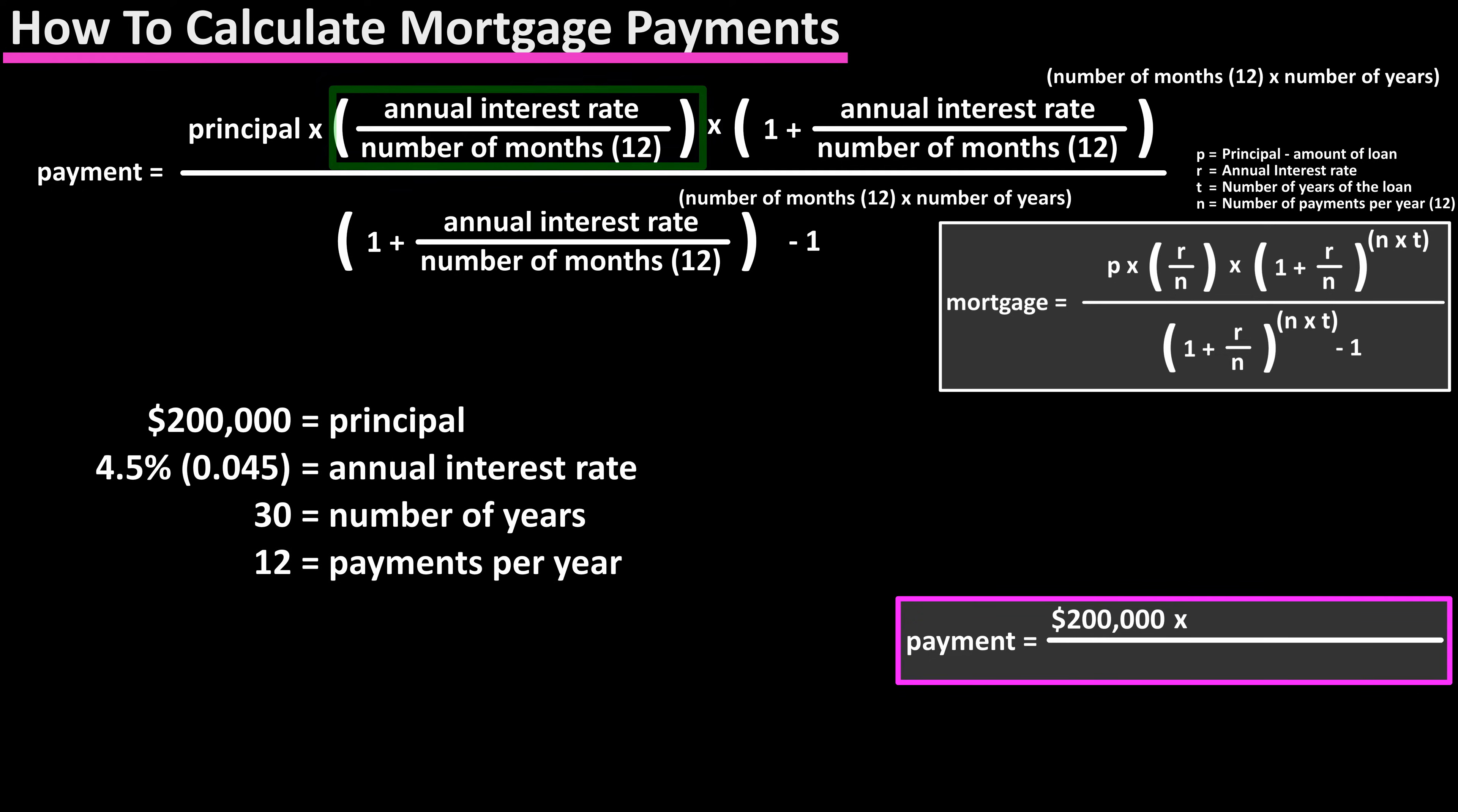In our formula we need to know the annual percentage rate divided by the number of months in a year. Our annual percentage rate is 4.5%, which mathematically is 0.045, and the number of months is 12, so 0.045 divided by 12, which calculates out to 0.00375.